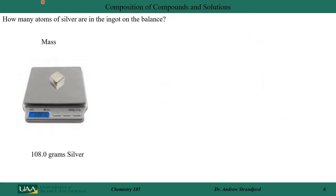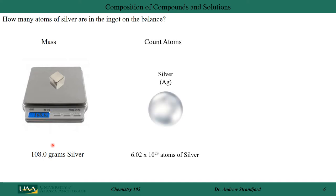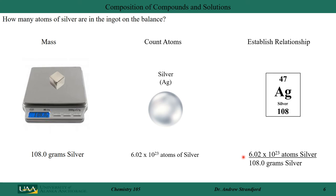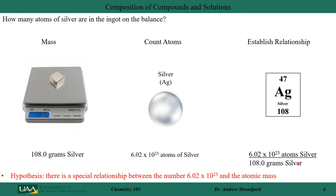Let's do it again. How many atoms of silver are in the ingot on the balance? I put this cube of silver on the balance and measure its mass: 108.0 grams of silver. When I count those atoms, I get 6.02×10²³ atoms of silver — a very similar relationship to the other elements. There are 6.02×10²³ atoms of silver in every 108 grams of silver. Looking at the periodic table, that number appears again: 108 atomic mass units for silver. My hypothesis after these three measurements is that there is a special relationship between 6.02×10²³ and the atomic masses, because this number keeps coming up.